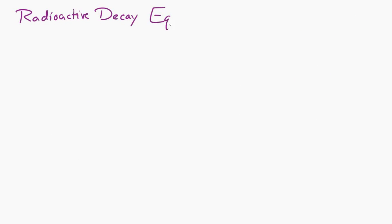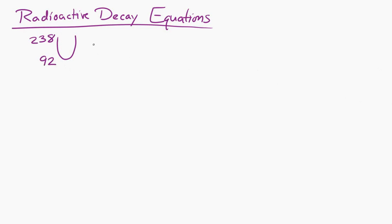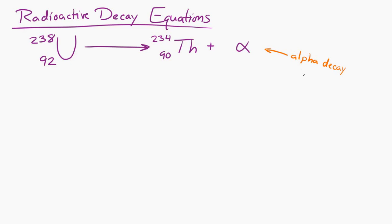Let's look at an example. Let's say we have uranium-238, and that decays into thorium-234 by emitting an alpha particle. So we start out with uranium-238, and after the decay we get thorium-234 plus the alpha particle. The number up top is often referred to in chemistry as the mass number — it's the number of protons and neutrons contained in the nucleus.